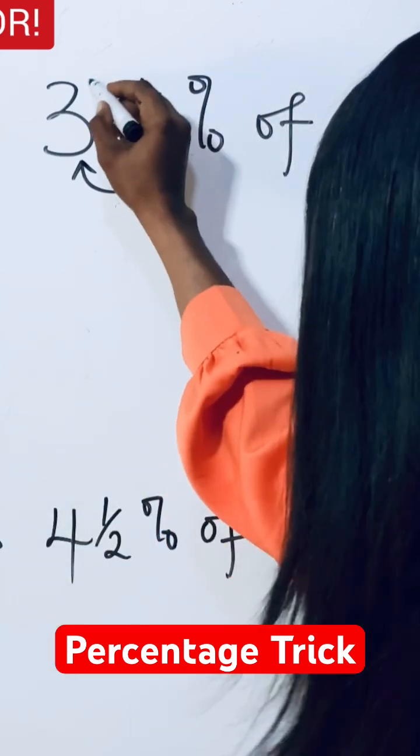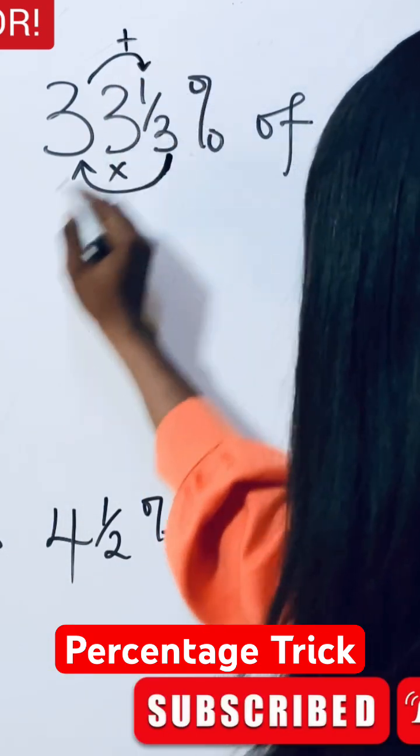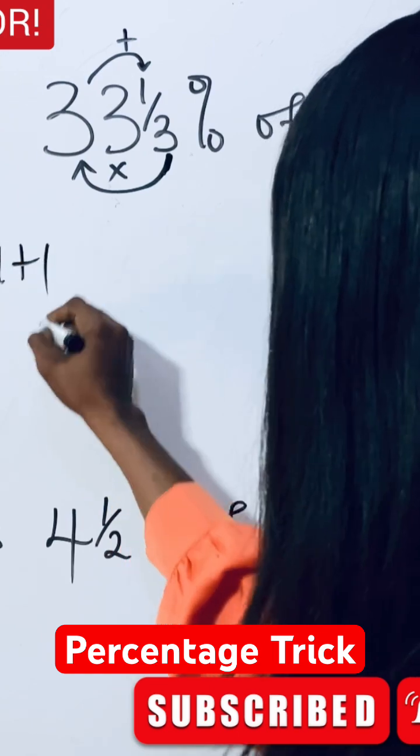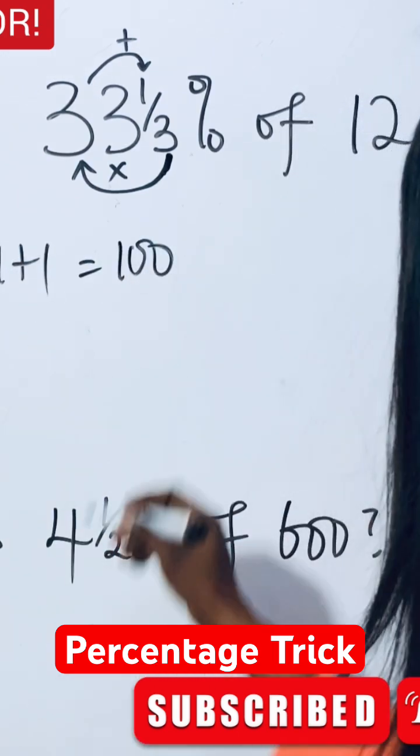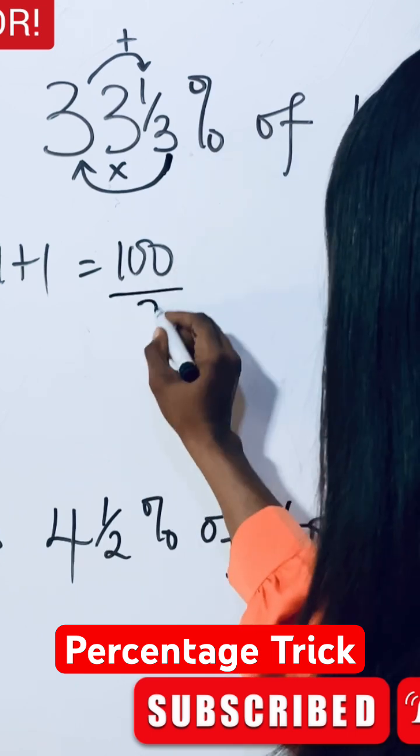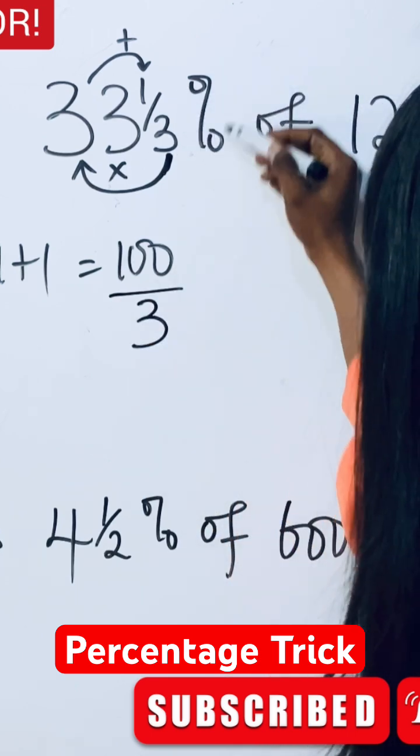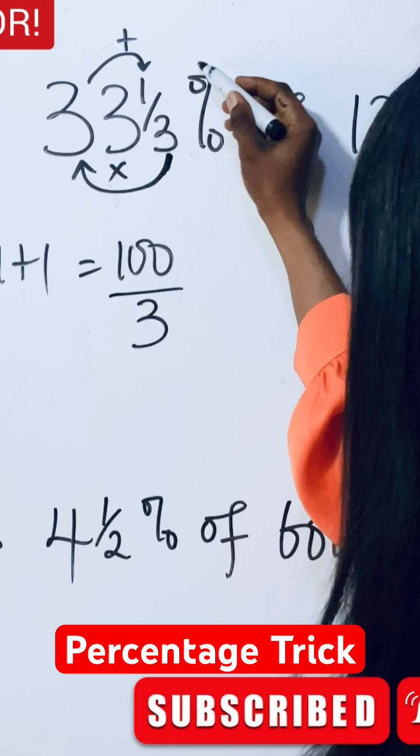Then add 1 to it. 99 plus 1 is going to give us 100. Did you see that? So you are going to have 100 over this 3. Now remember, percentage is always a fraction and it has two zeros.